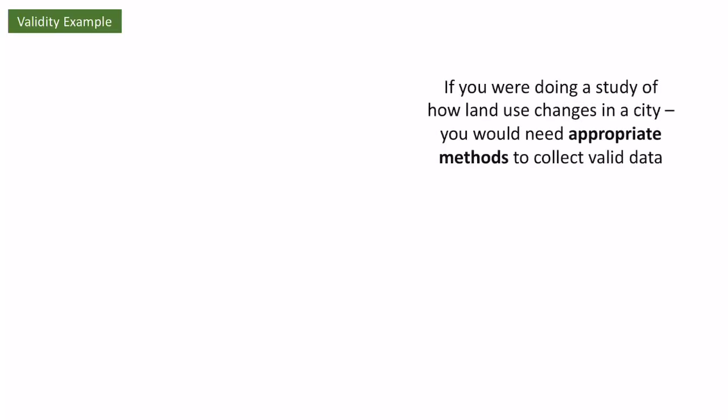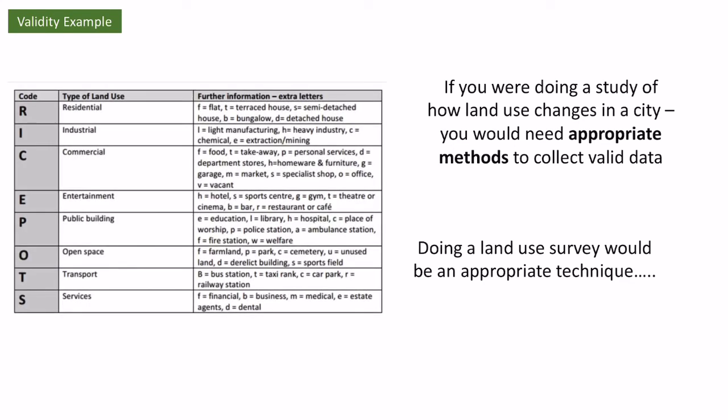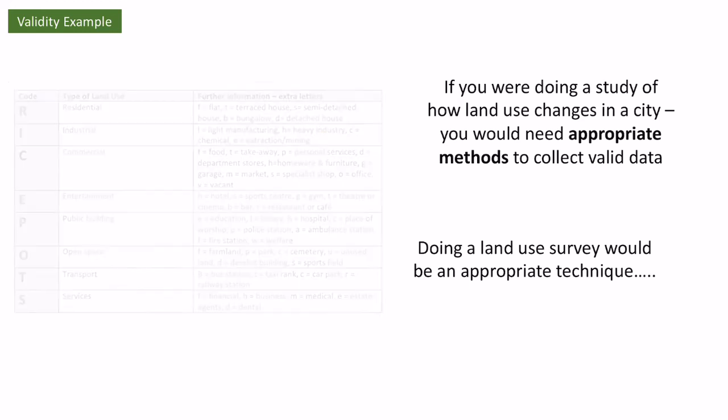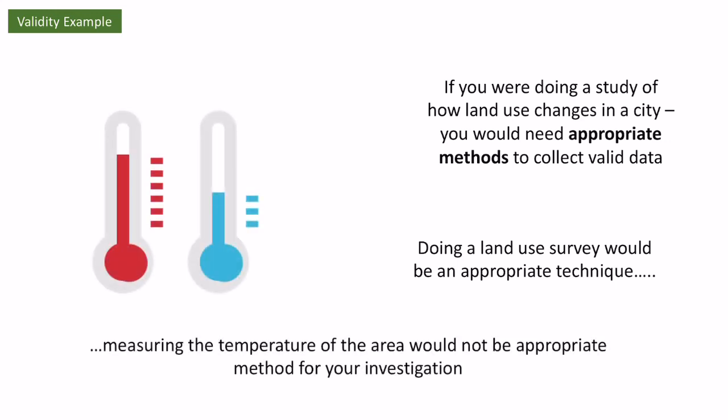To make conclusions more valid, I'd need multiple bits of data — maybe combining this photograph with an EQS score from the local area. I also need to choose not just an appropriate sampling strategy but also appropriate methods to collect my data. If I was doing a land use survey throughout the city, using a land use survey is an appropriate technique — it tells me how much is residential, industrial, commercial, and so on. However, if I was measuring land use change but instead took the temperature of each area, that's not relevant — it doesn't tell me anything about land use change, so it wouldn't be appropriate.